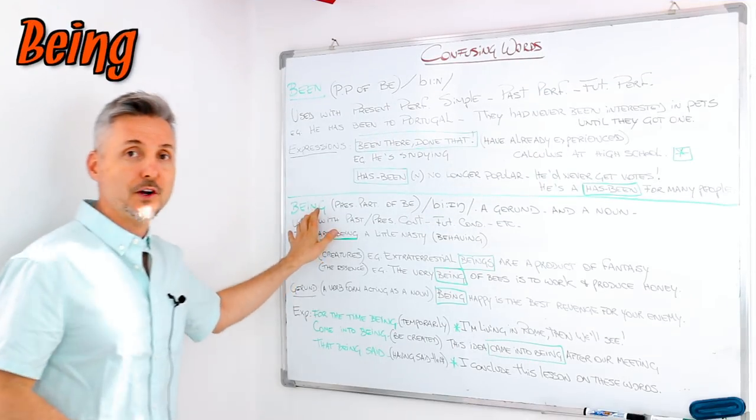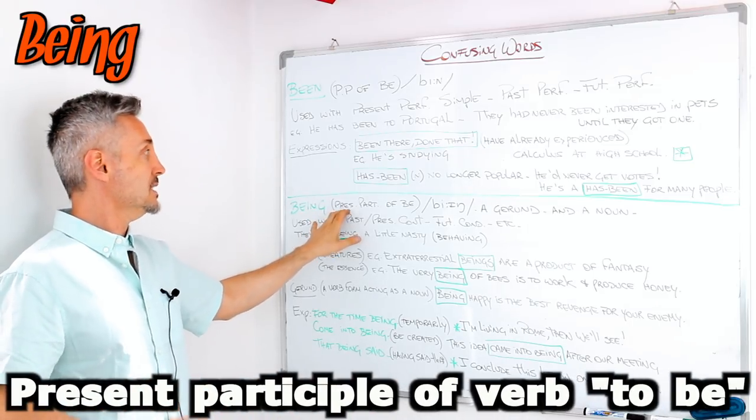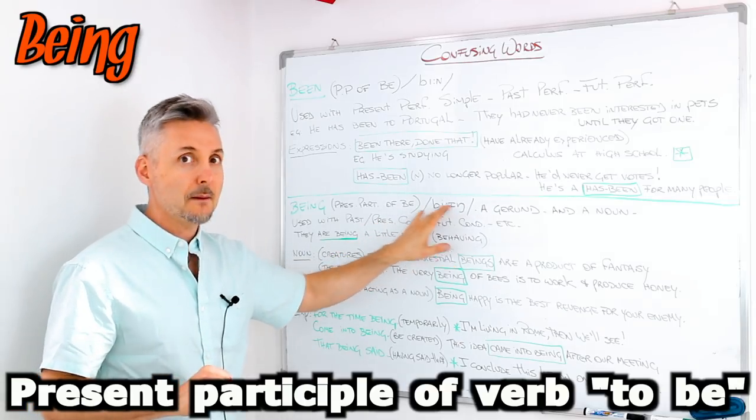Now, let's look at the other word. Being. And this is the present participle of the verb to be. Being.